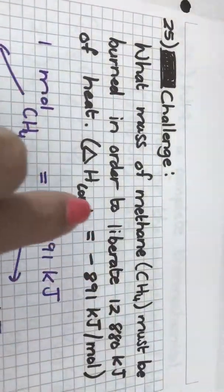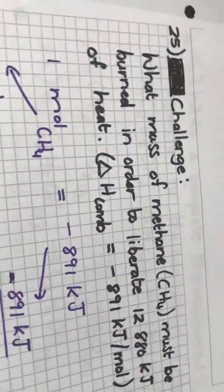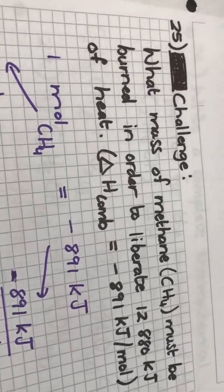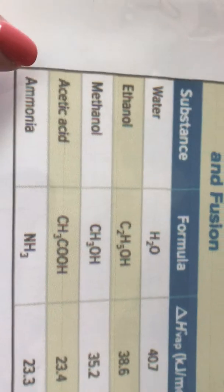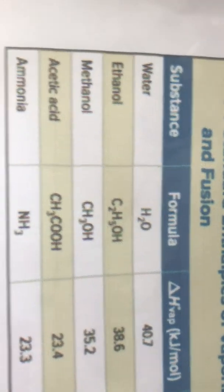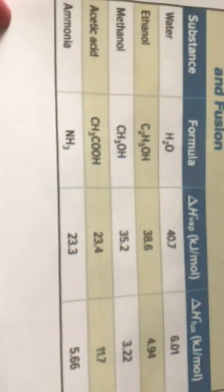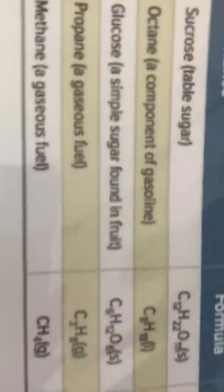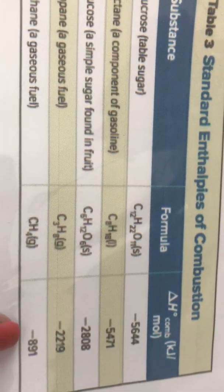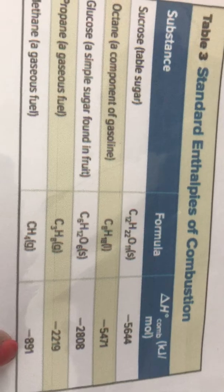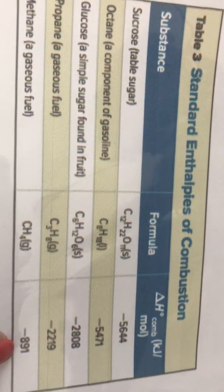So again you have to go look up the combustion value for methane on the table. So I've written it in here but if we go to the table we see that for methane, oh where's methane now, sorry wrong table, sorry about that, here we go, for methane to burn in oxygen I will use 891 kilojoules for every one mole.